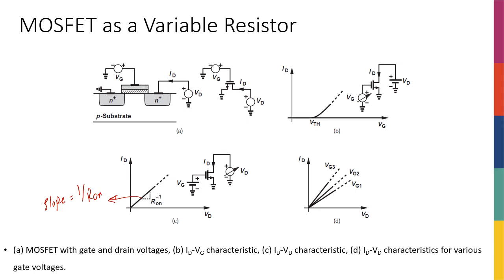The slope is 1/R_on because it's current versus voltage — if I had voltage versus current, the slope would just be R_on by Ohm's law. On the other hand, if I start to increase the gate voltage, I'm going to have more and more free electrons in the channel, so the resistance is going to decrease. This is shown in the bottom plot: if V_G3 > V_G2 > V_G1, as I increase gate voltage I get lower resistance and a steeper slope, since slope equals 1 over that resistance.